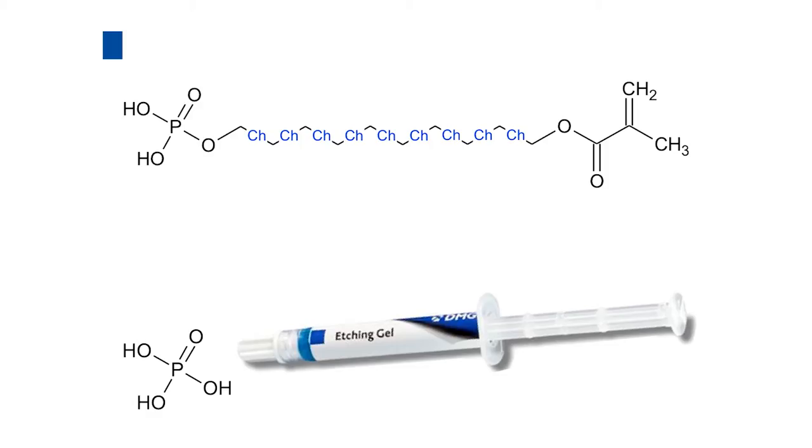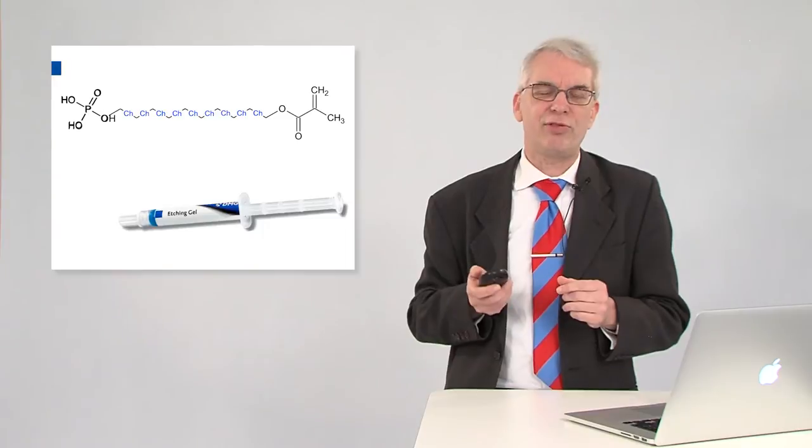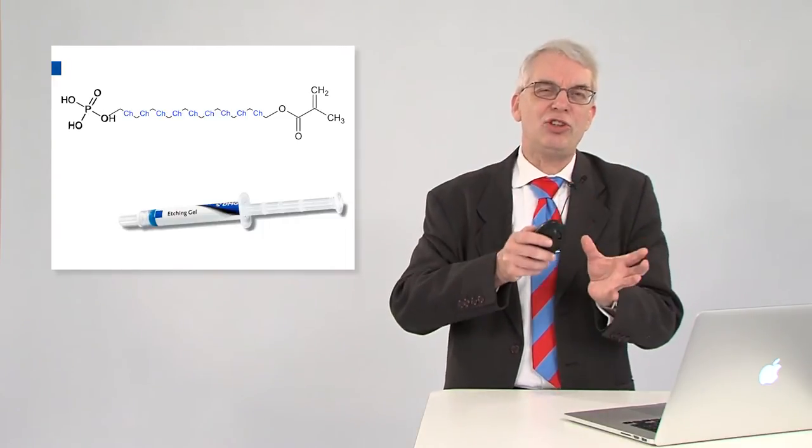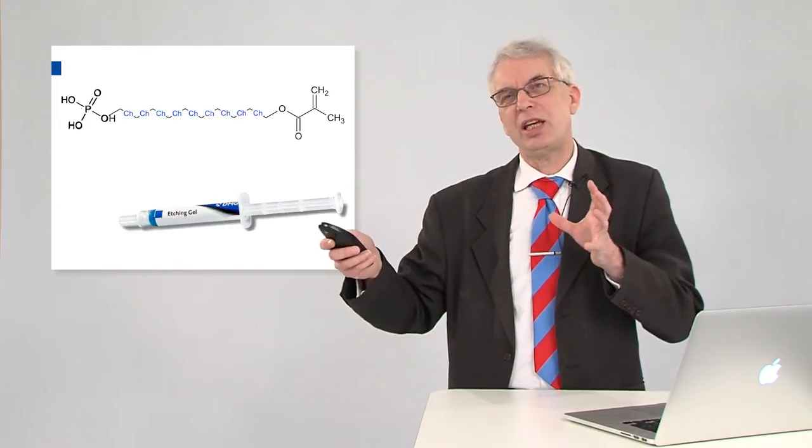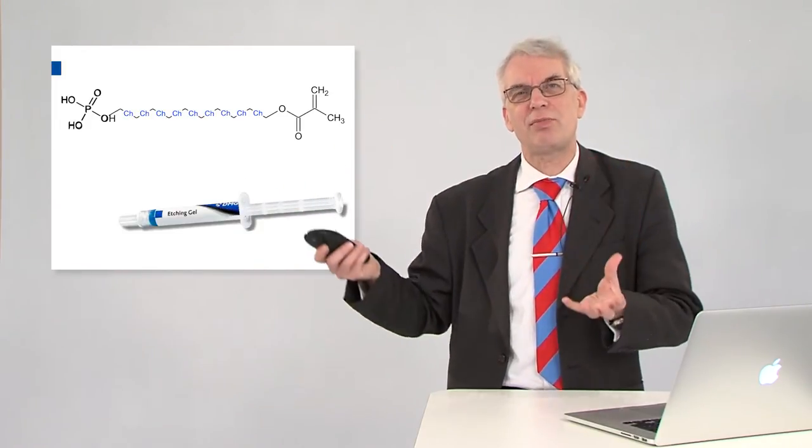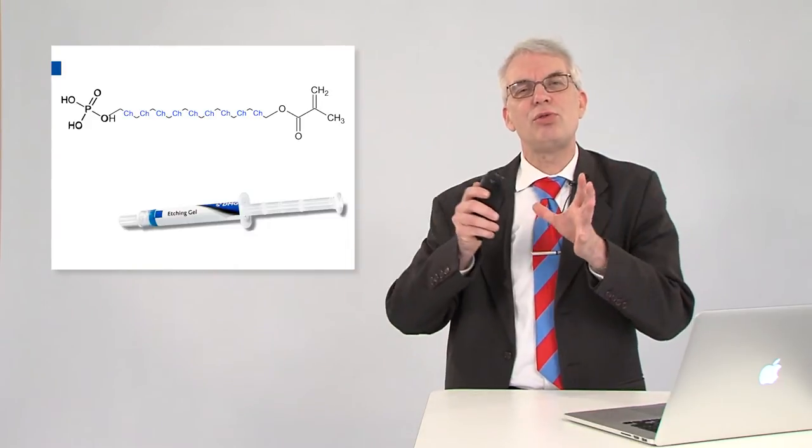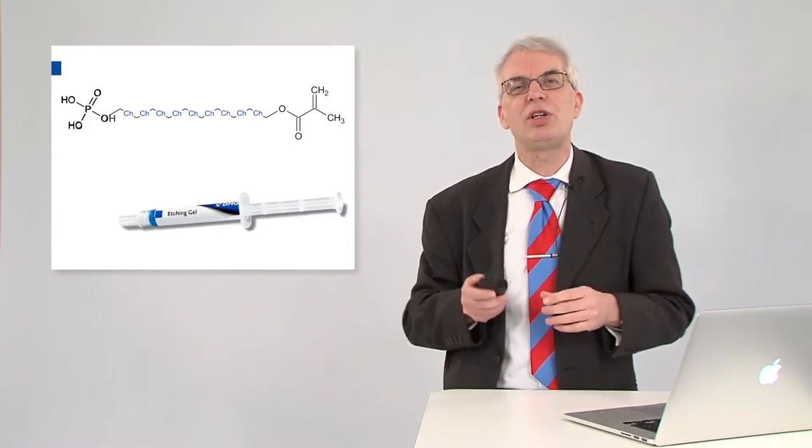The reason behind this is we have these very special bonding monomers that promote adhesion. And it basically consists of three parts. There's the part on your right where you have something that looks like phosphoric acid—a modified phosphoric acid. And this part will do the etching and part of the bonding. Then we have a linker, and at the end of the linker we have something with a double bond that's used to incorporate it into the cured material.